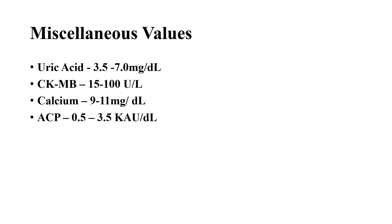Under miscellaneous values, which are also very important: uric acid is 3.5 to 7 mg per dL; CKMB is 15 to 100 units per liter; and calcium is 9 to 11 mg per dL.